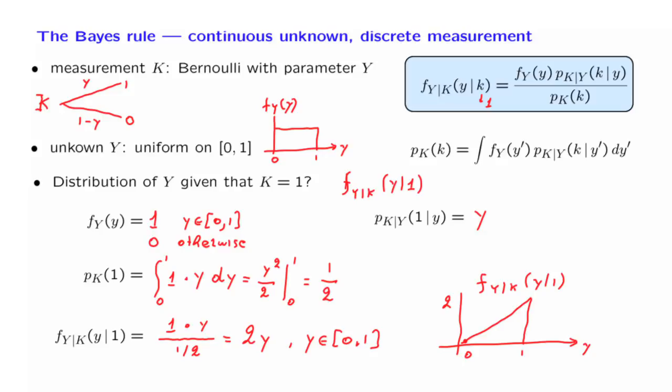This example is a prototype of situations where we want to estimate a continuous random variable based on discrete measurements. Essentially, it is the same as trying to estimate the bias of a coin based on a single measurement of the result of a coin flip.